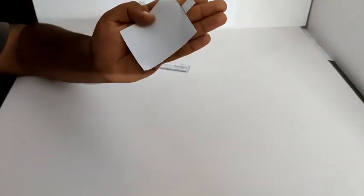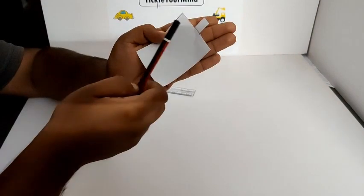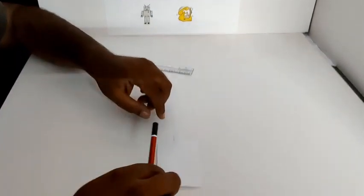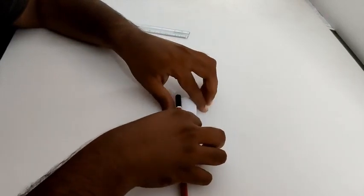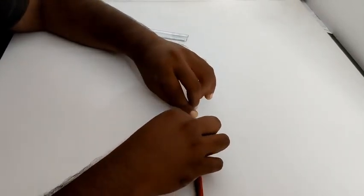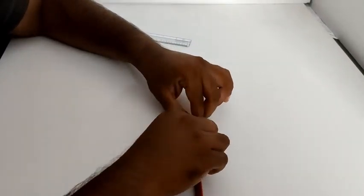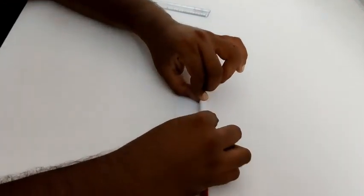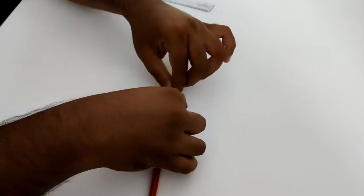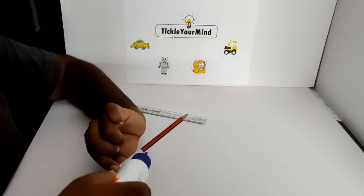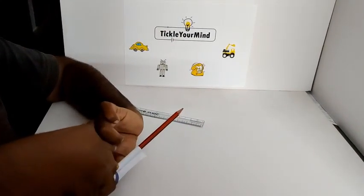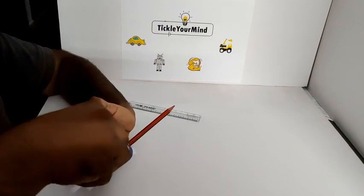Now what you have to do is, take a pencil and just roll the part of paper over the pencil. So it will be something like this. And then stick that part with this part.